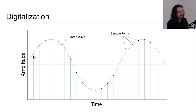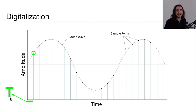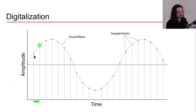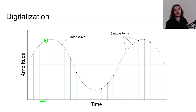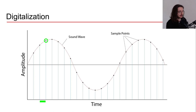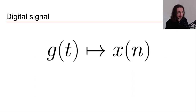We sample an analog signal — the one you see here in red — and take certain sample points. We use capital T, the sampling period, which tells us after how much time we take a sample. So here we have the first sample point, then the second, and the third. For more on the digitalization process, including both sampling and quantization, check out a previous video in this series.